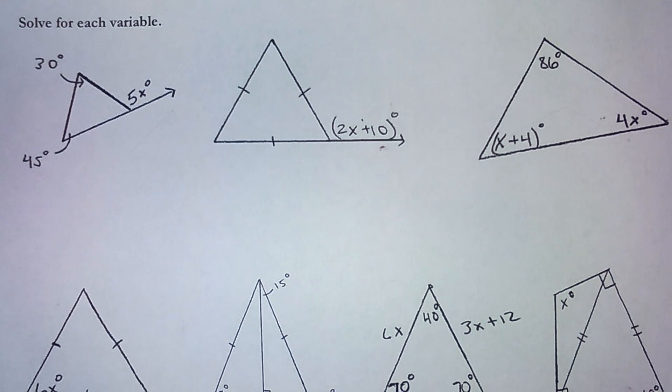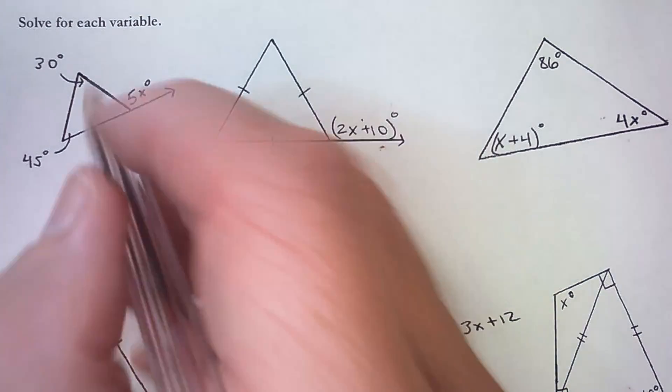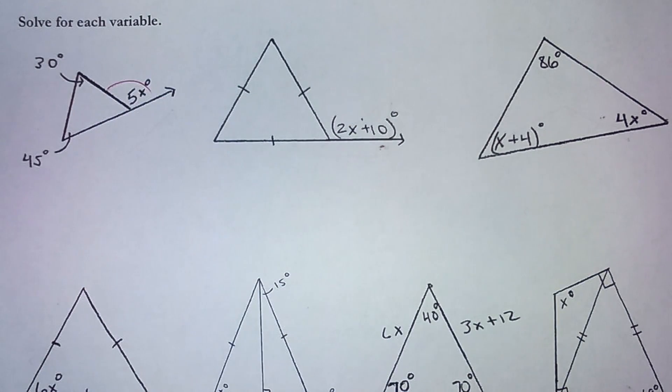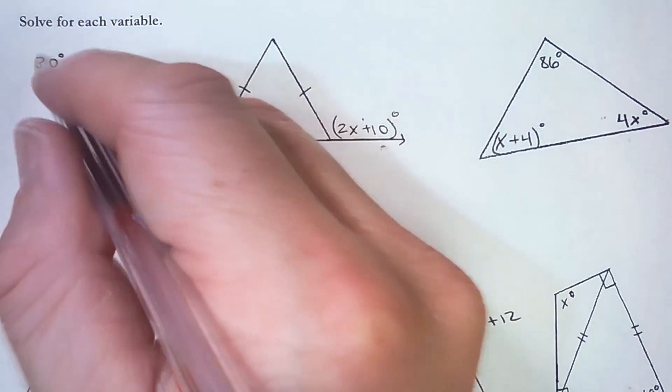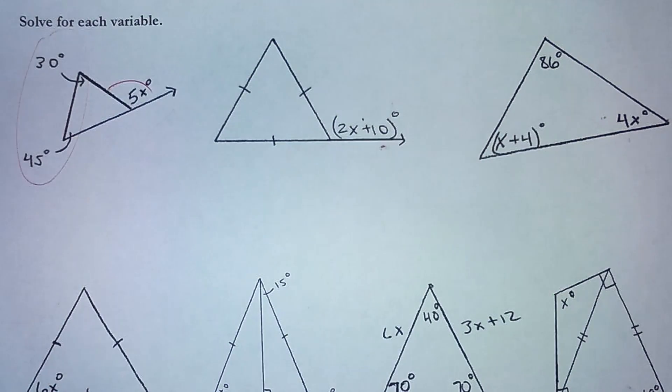We'll continue our triangle review now with some algebraic triangle problems here. So first I have an exterior angle here, and an exterior angle is always equal in measure to the sum of the two remote interior angles.